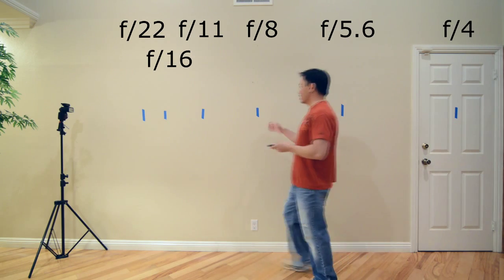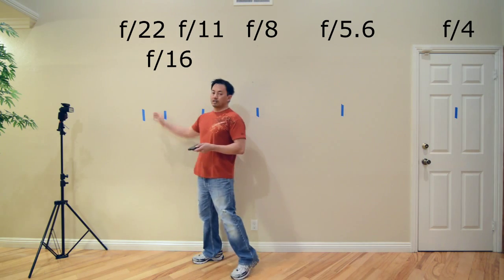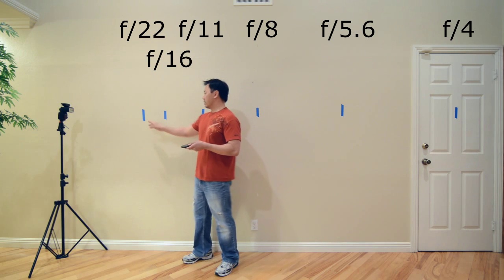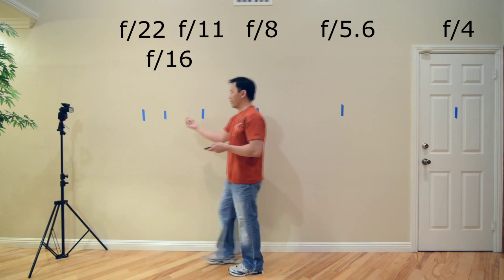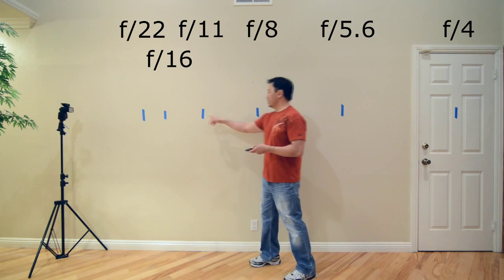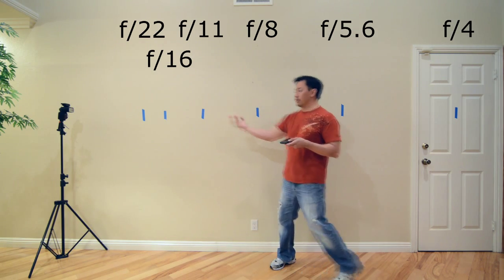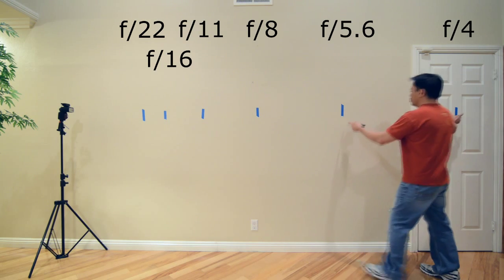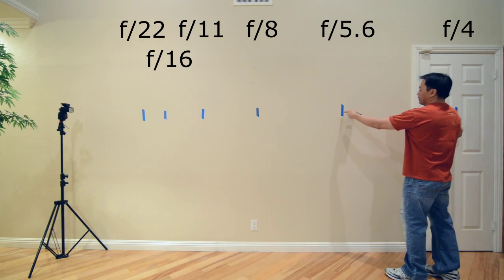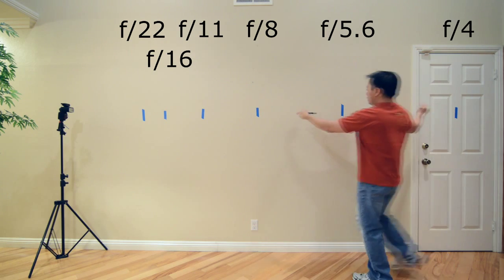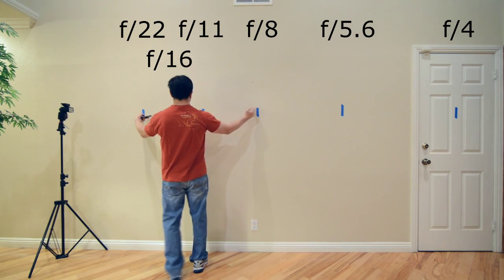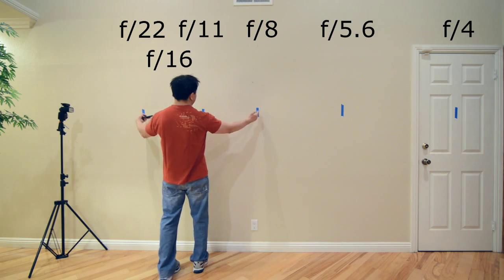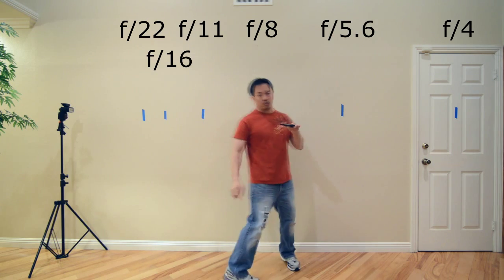So as you can see here, the light falls off really quickly. The distance from here to here—as you get further away from the light source, the difference between each stop gets further and further away. The distance between f4 and f5.6 is a whole lot bigger, which is one stop of light, than the distance here, which is about four stops of light.